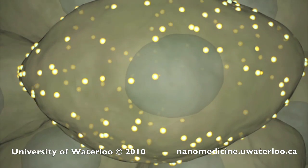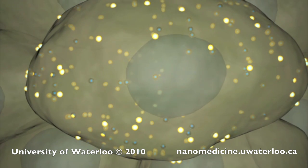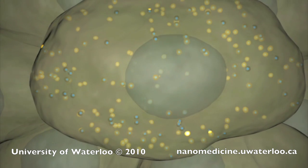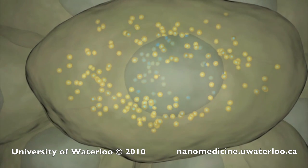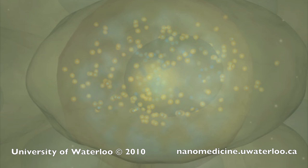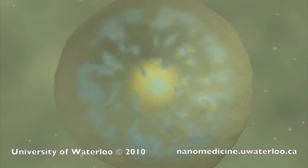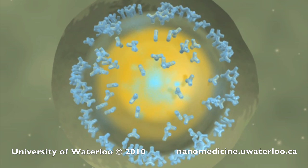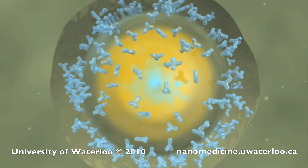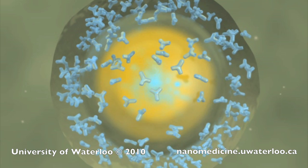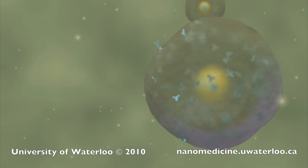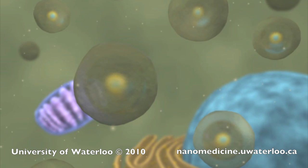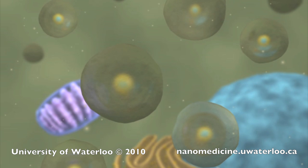This process enables thousands of nanoparticles to enter into each of the targeted cancer cells. Inside the cell, the nanoparticles are enveloped in endosomes. These endosomes merge to form larger endosomes, or eventually lysosomes, the digestive stomachs of cells.